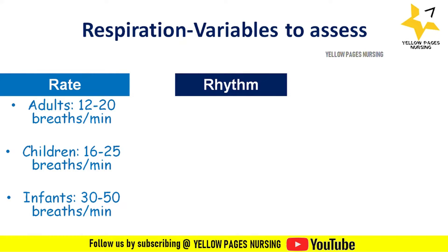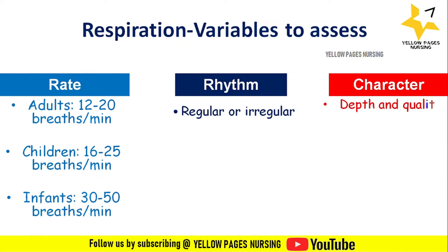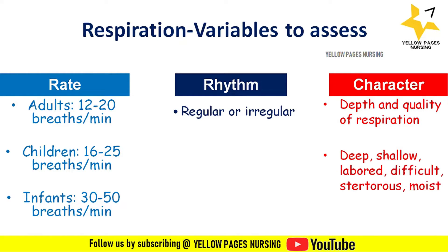The next variable is rhythm, which is the regularity of respirations — that is, the spacing between breaths. Rhythm is either regular or irregular. The next variable is character, defined as the depth and quality of respiration. Character is expressed as either deep, shallow, labored, difficult, stertorous, or moist.